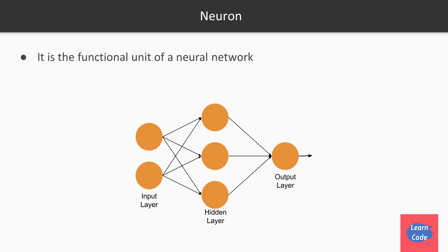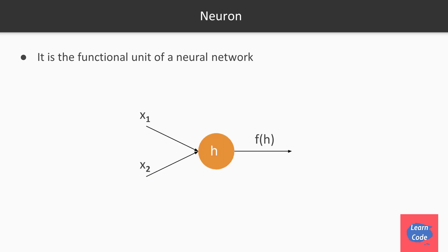A neuron is the functional unit of a neural network. This is the architecture we saw in the previous video as well, where we have the input layer, the hidden layer, and the output layer. These nodes over here are called neurons.